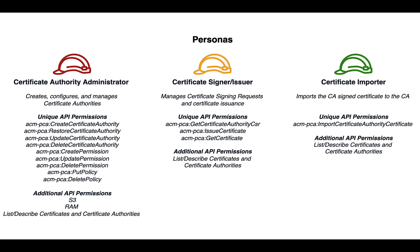The second persona is the Certificate Signer and Issuer. This user is managing certificate signing requests as well as certificate issuance. The Certificate Importer is the last role and is responsible for importing the CA signed certificate into the CA, which will make it fully operational.